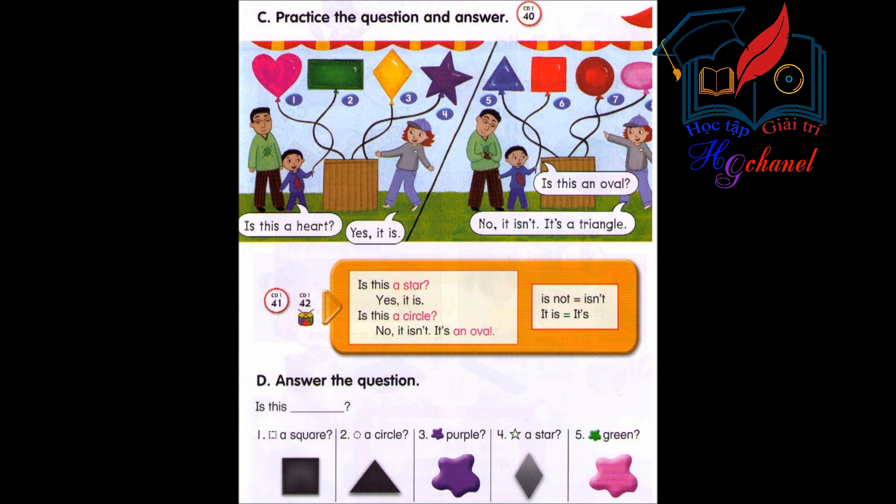Track 42. Is this an oval? No, it isn't. It's a triangle. Is this a diamond? Yes, it is. Is this a circle? No, it isn't. It's an oval.